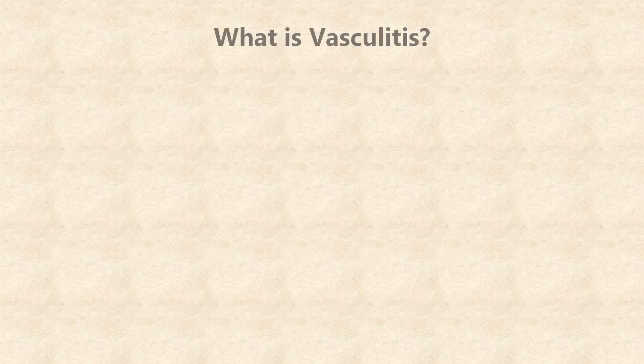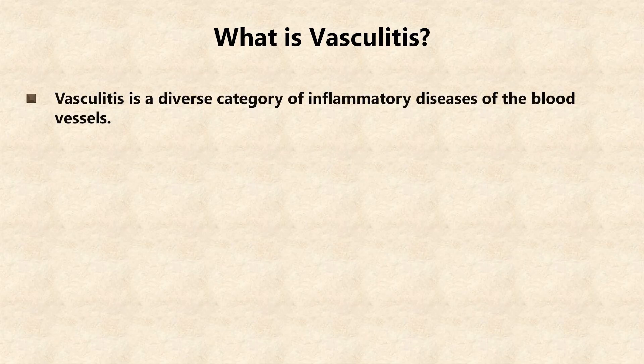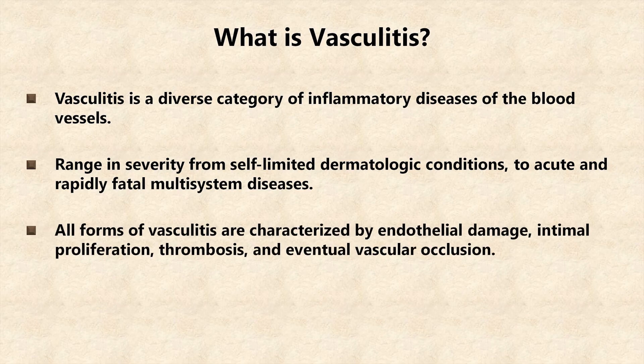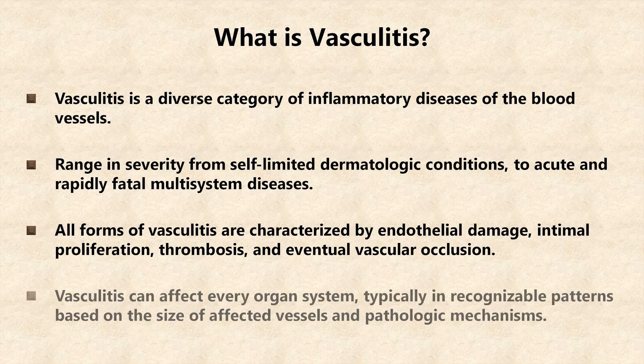So first, what is vasculitis? Vasculitis is a diverse category of inflammatory diseases of the blood vessels. These diseases range in severity from self-limited dermatologic conditions to acute and rapidly fatal multi-system diseases. All forms of vasculitis are characterized by endothelial damage, intimal proliferation, thrombosis, and eventual vascular occlusion. Vasculitis can affect every organ system, typically in recognizable patterns based on the size of the affected vessels and the underlying pathologic mechanisms.